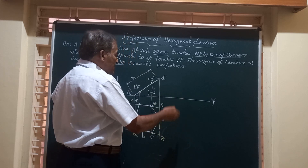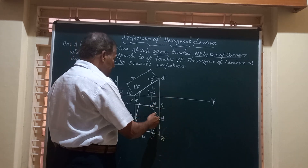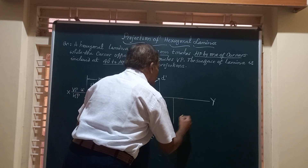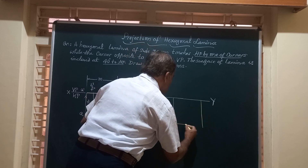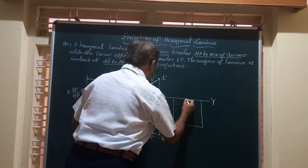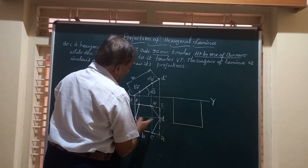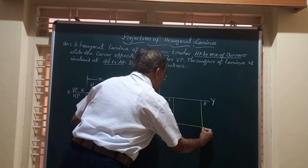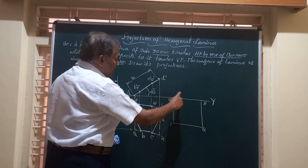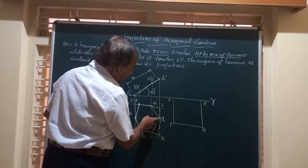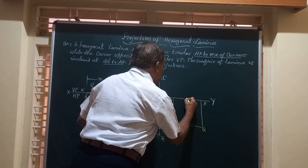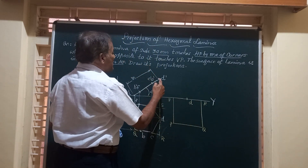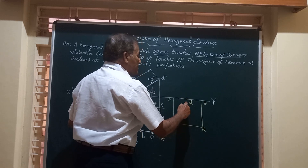I rotate the figure so that AD becomes vertical and D touches the XY line. Drawing the box PQRS here with D on the SR side — D is exactly in between S and R — I locate point D on the XY line. Since D is touching VP, it appears as a point on XY in the top view.